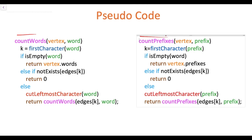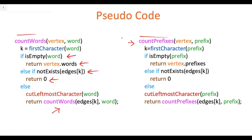The count word and count prefix functions are very similar. If we have to find an empty string, we simply return the number of words or prefixes associated with the vertex. But if the string is not empty, we have to find the corresponding branch of the tree. If the branch doesn't exist, we return 0. In count word: if the word is empty return the word count of the current vertex; if not, check if the corresponding edge exists — if not return 0, otherwise recurse on the remaining characters. The same logic applies for count prefix: if the prefix is empty return the prefix count; if not, check whether the branch exists — if not return 0, otherwise recurse on the remaining characters.